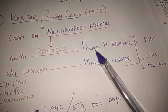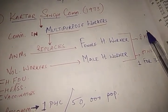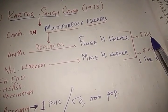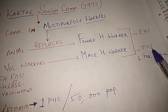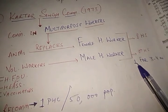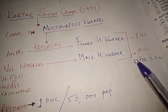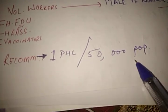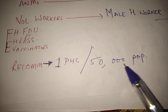The Kartar Singh Committee gave the concept of multi-purpose workers. These male and female health workers are supervised by health supervisors — female health workers by female health supervisors and male health workers by male health supervisors. There should be one health supervisor for three to four health workers. It also recommended one PHC for 50,000 population.